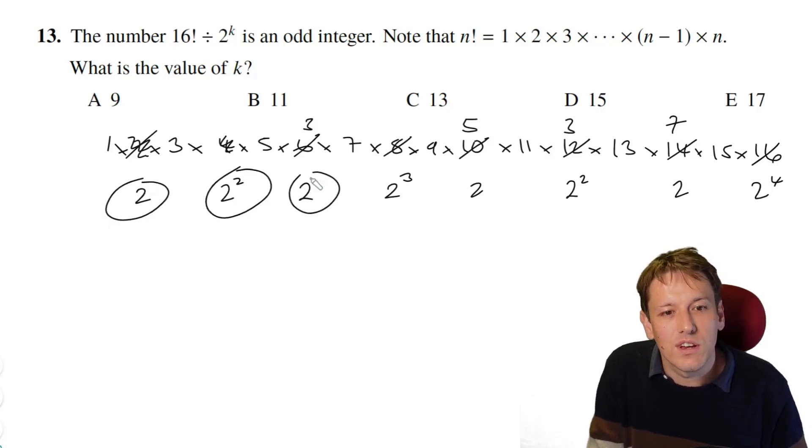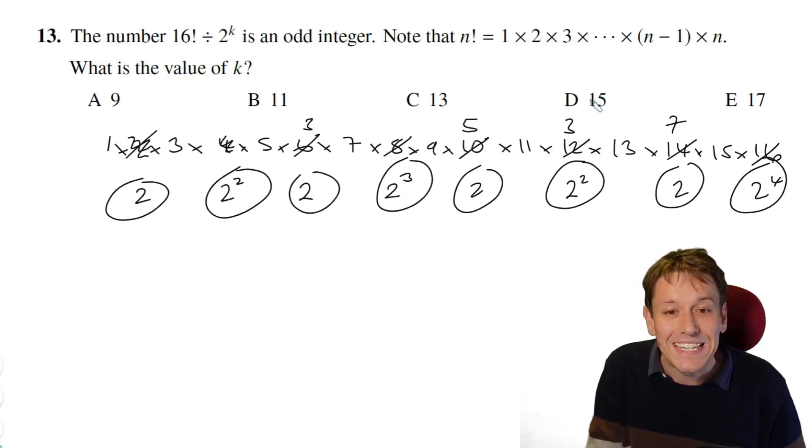So this is exactly the number of 2s that I need to divide by to get an odd integer. So how many are there in total? 1, 2, 3, 4, 5, 6, 7, 8, 9, 10, 11, 12, 13, 14, 15. And the answer here is D, 15.